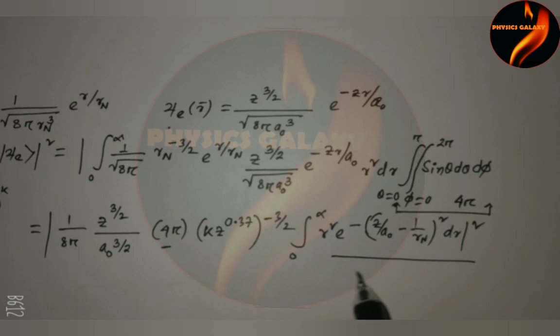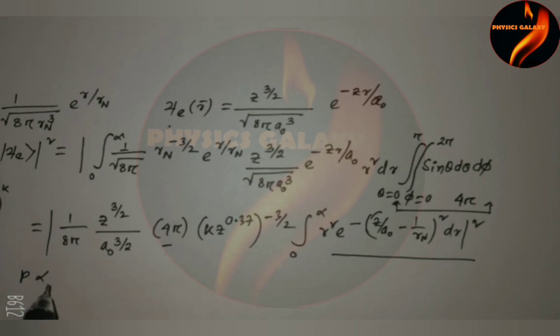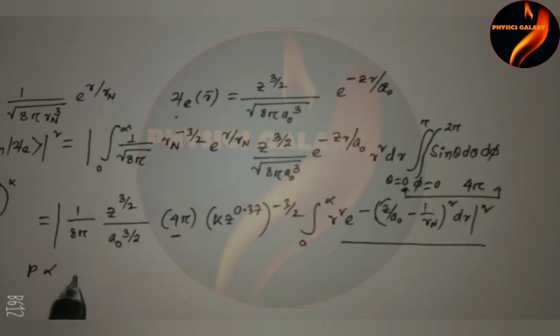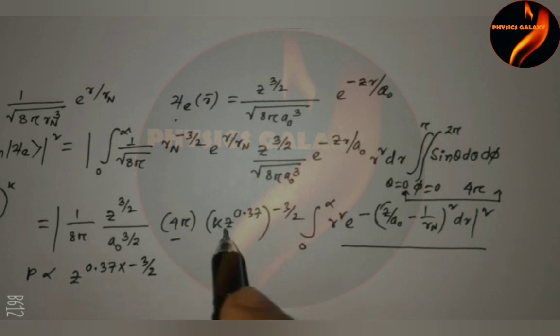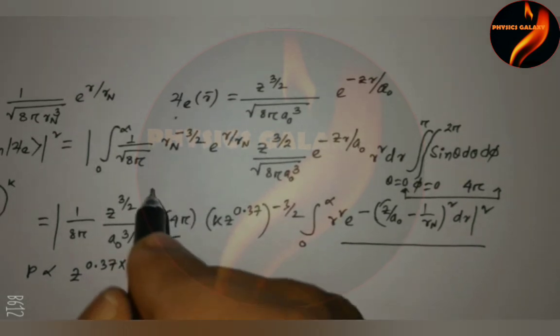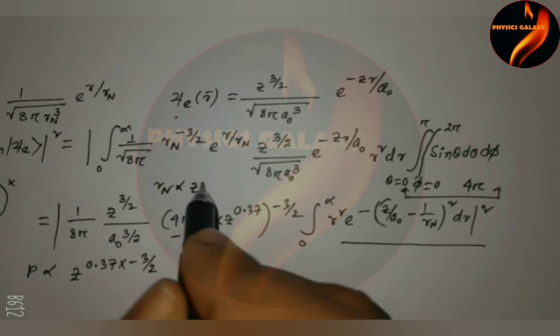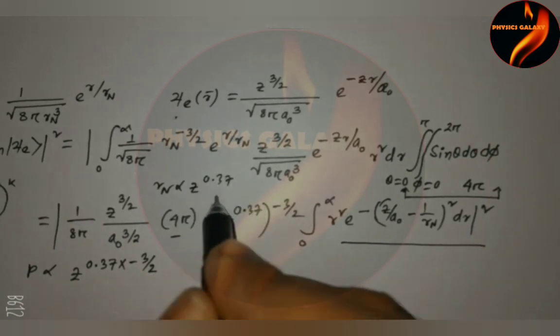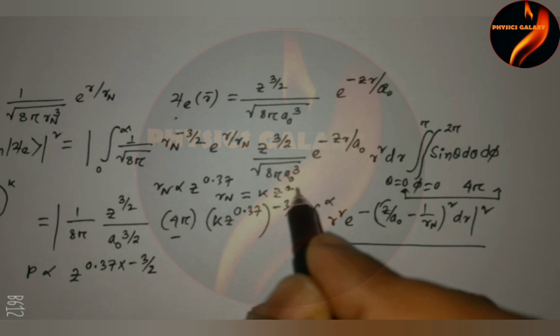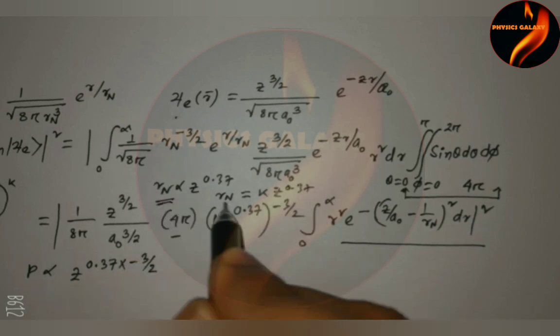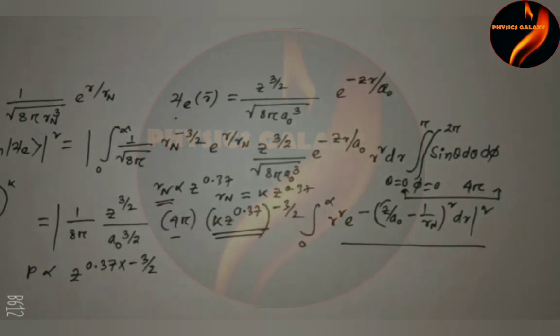And also this is the Laplace transform. So we get the probability is proportional to Z to the power 0.37 and to minus 3/2. Here we can see the given Rn is proportional to Z to the power 0.37. So we take the proportionality constant k·Z^0.37. So Rn = k·Z^0.37. Put this value.